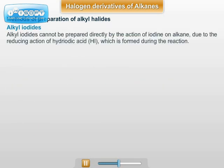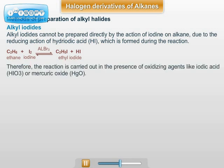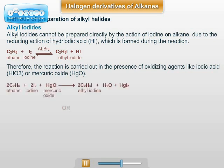Alkyl iodides cannot be prepared directly by the action of iodine on an alkane due to the reducing action of HI. Therefore, the reaction is carried out in the presence of oxidizing agents like iodic acid, mercuric oxide (HgO). For example, ethane reacts with iodine in the presence of mercuric oxide to form ethyl iodide.